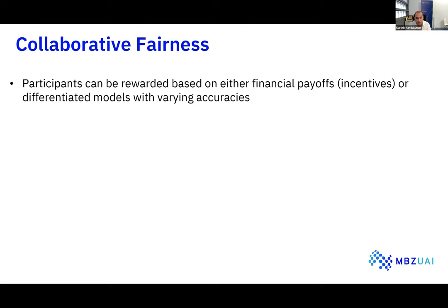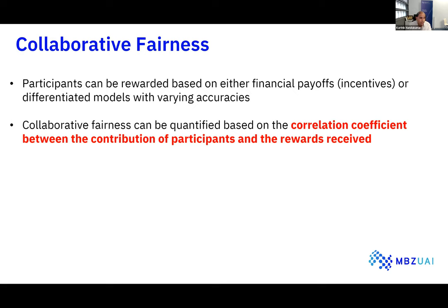Regarding collaborative fairness — benefits can be given either as financial incentives or as differentiated models. Each participant in a collaborative setting gets a differentiated model with varying levels of accuracy: someone who contributes more gets a higher-accuracy model, while someone contributing less gets a model still better than their local model but with lower accuracy than highly contributing participants. Collaborative fairness is quantified by the correlation between contributions and rewards received.